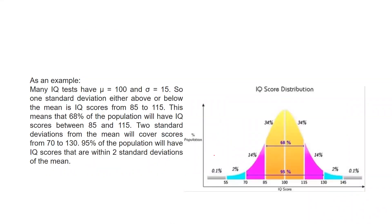In the same IQ example, mu is 100 and sigma is 15, giving the same values already explained. This also shows rejection regions: 0.1% lies in the extreme tails beyond three standard deviations. Within two standard deviations, 2.5% lies on each tail — not 2%, but 2.5% — because 95% falls in the middle, leaving 2.5% on each side. So 85 to 115 means 68% of the population will have IQ scores between 85 and 115.